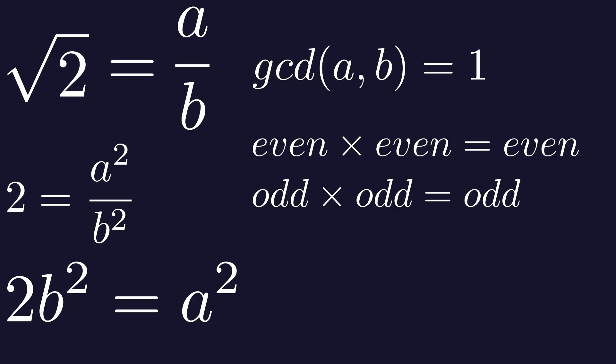We can write a as 2 times k, where k is an integer. Now we can replace a with 2k. We get 2 times b squared equals 4 times k squared. Now we can divide both sides of the equation by 2.